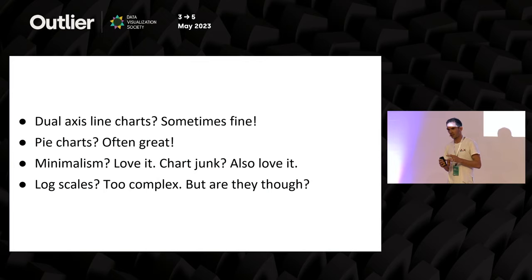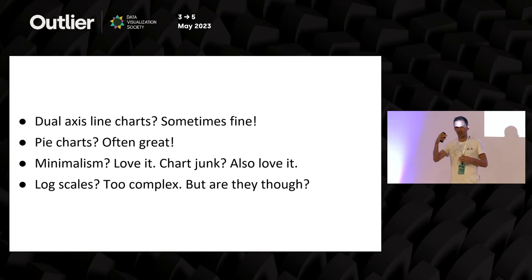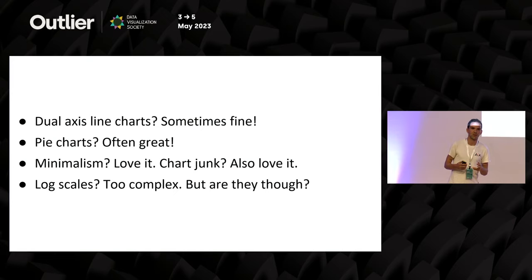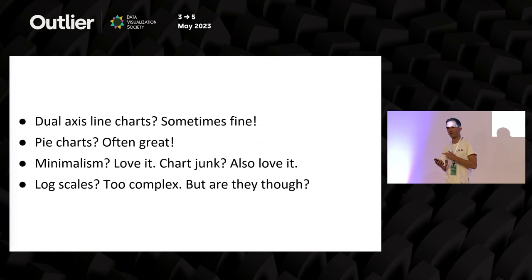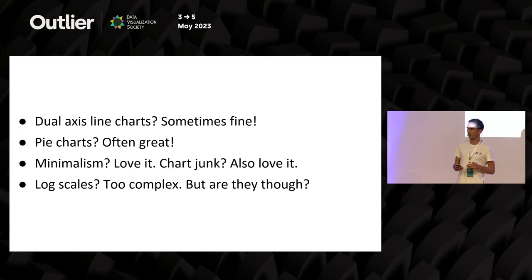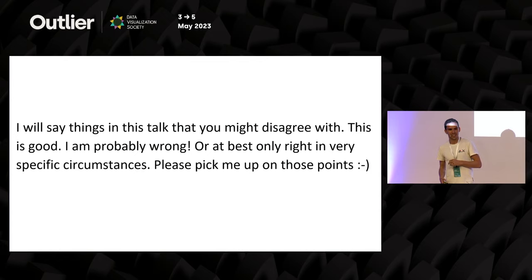Log scales — notoriously complex, no one understands them, never use them — whereas I think what people don't understand is the word 'log scale,' but if you do a chart that goes 1, 10, 100, 1,000, people do intuitively get it. All of that is a very long-winded way of saying we obsess over rules when we shouldn't. We should talk more about guidelines — things that work well in some situations and not others. So over the next 40-odd minutes, as I talk about things I've found effective, take them in that context: these are not rules, they're things that might work sometimes, and other times you might want to do the exact opposite.